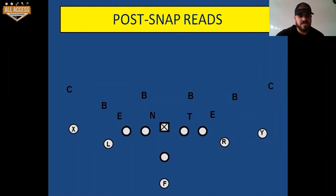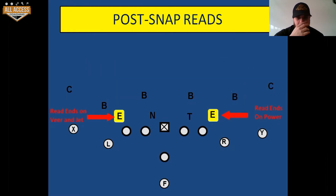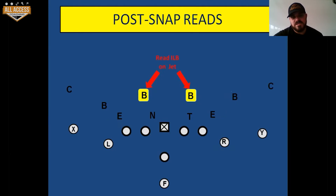This is a simple four-man front. We're going to read outside linebackers on belly and on belly pass. We're going to read DNs on veer and jet - we're not a huge veer team, but we do run it here and there. We're going to read those ends on veer and jet, and also read ends on power.